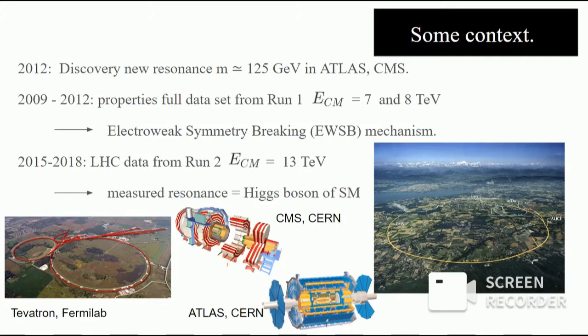Then, we increased the energy of the experiments — ATLAS and CMS — from 7 to 8 TeV, and then the corresponding cross-sections also increased. And the bump, the significance with which we could observe this bump around 125 GeV, also increased. So the discovery of this resonance, of this Higgs particle, was made in 2012 by the ATLAS and CMS collaborations.